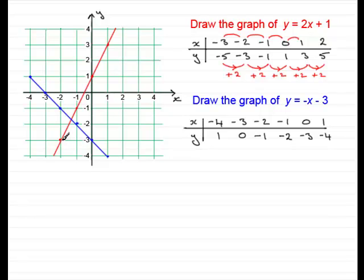Let's look at the graph. Going one unit across, you can see we gain two units in the y value. One unit across, two units up — one across, two units up — and so on. This is called the gradient. For every one unit across, we rise two units. And that seems to be the number in front of the x.